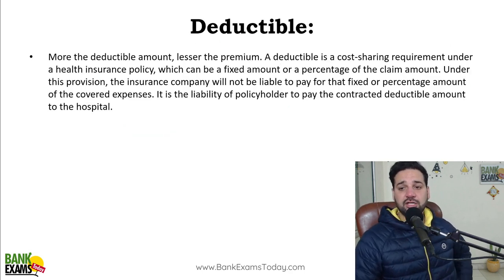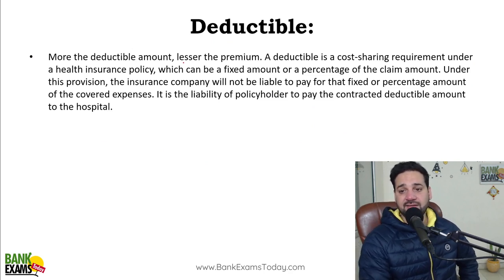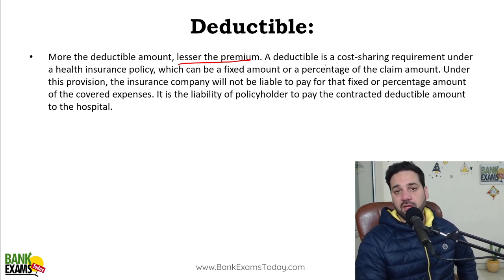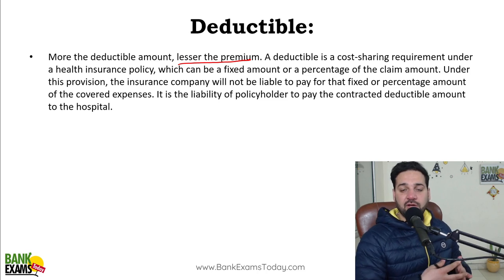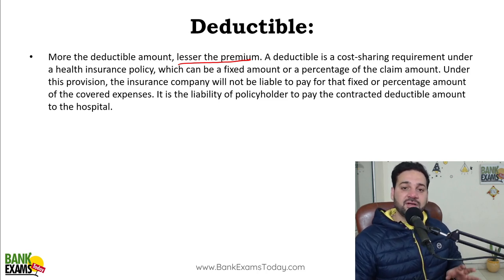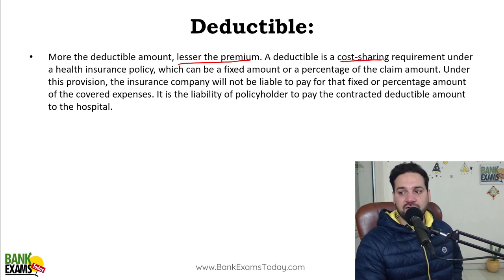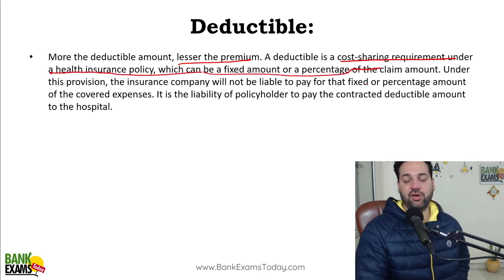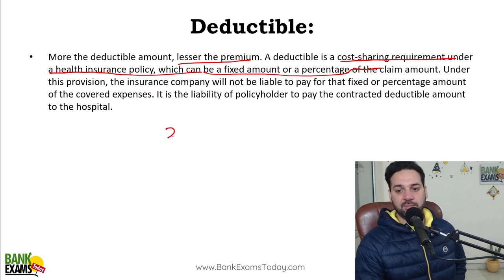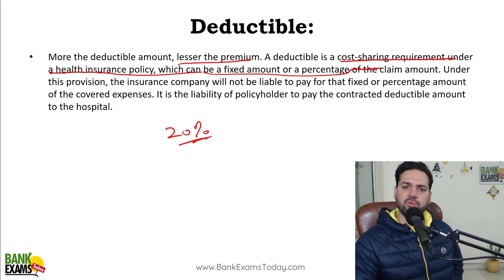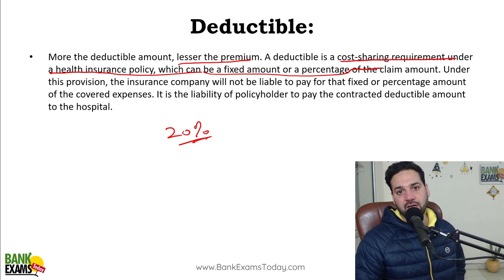Deductible: more deductible means lesser the premium. At the time of taking the health insurance policy, you decide with your insurance company that at the time of treatment you will share the expenses. Deductible is a cost-sharing requirement under the health insurance policy, which can be a fixed amount or a percentage of the claim. You can say 20% you are going to pay yourself — you get a discount in premium, but in case of a claim you have to pay a part of the treatment expenses yourself.